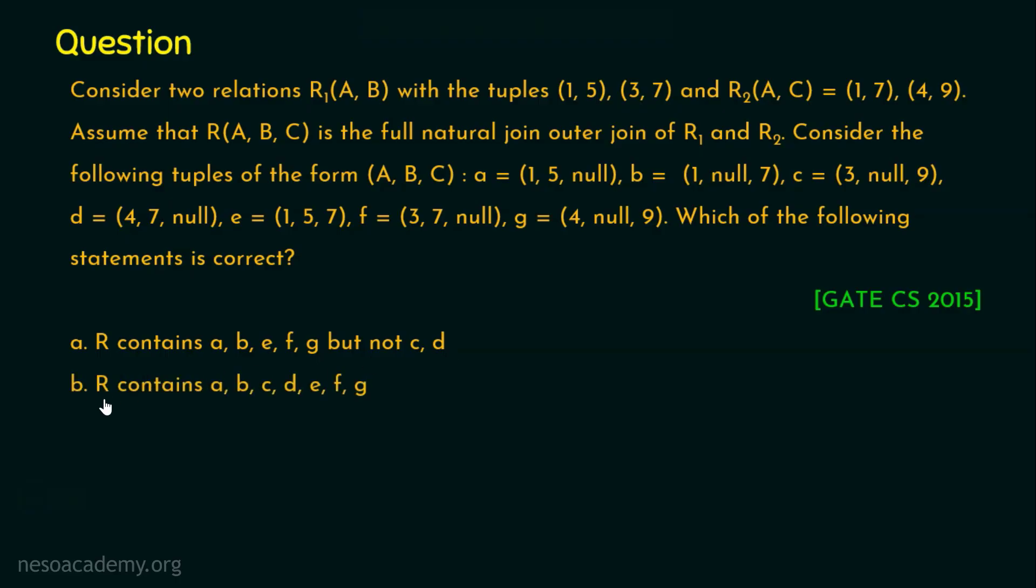Option B: R contains a, b, c, d, e, f, g. Option C: R contains e, f, g but not a, b. And Option D: R contains e but not f, g. I request you to pause this video for a while and think about the right answer.